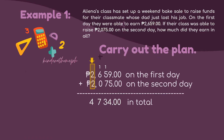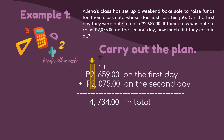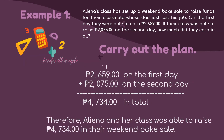We are done with the addition and have got the sum. Since our numbers are in the thousands, we should not forget the number comma. We should also not forget the peso sign — a P with two bars in the middle. Therefore, Alina and her class was able to raise 4,734 pesos in their weekend bake sale.